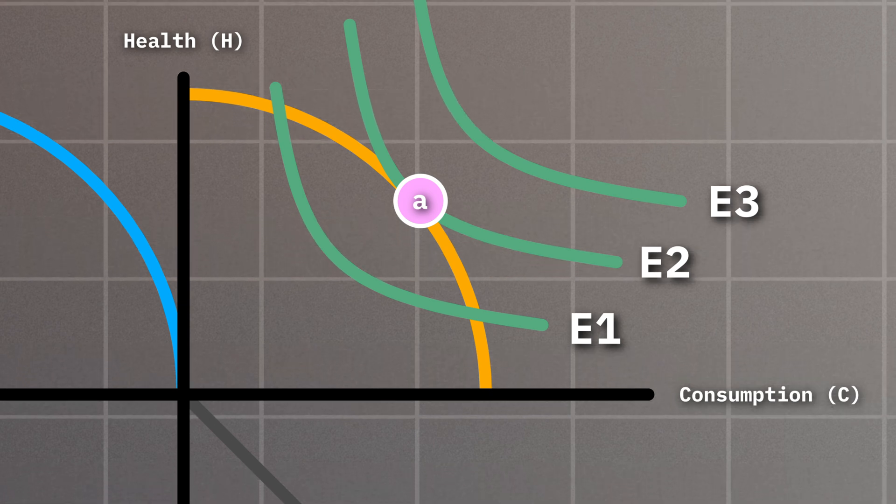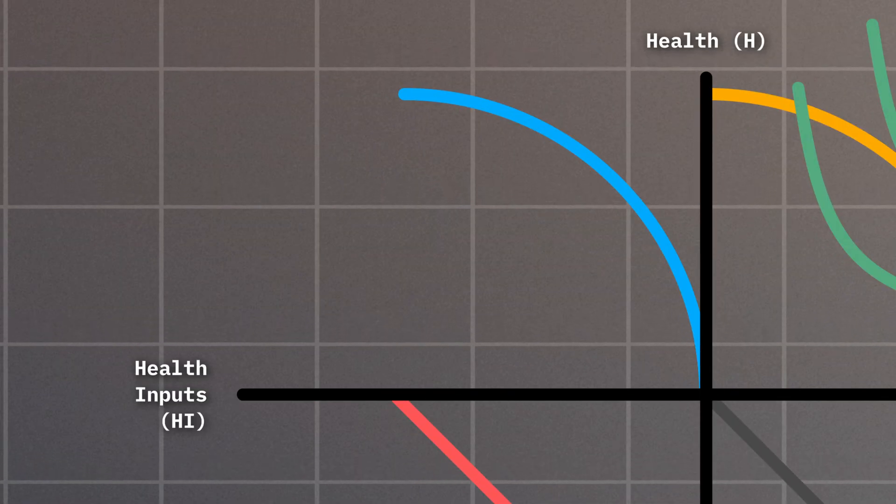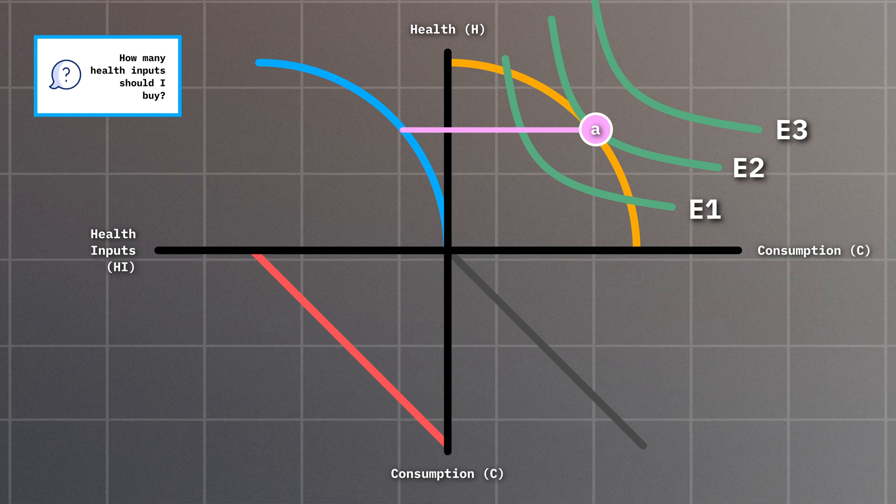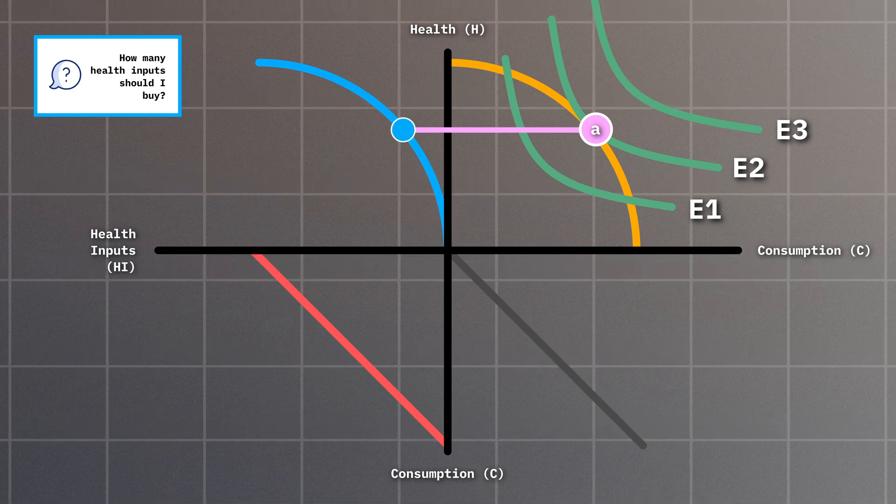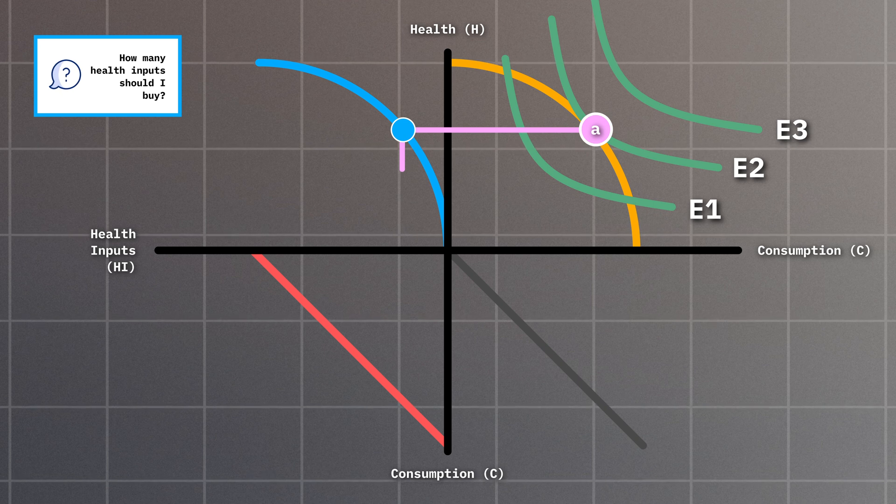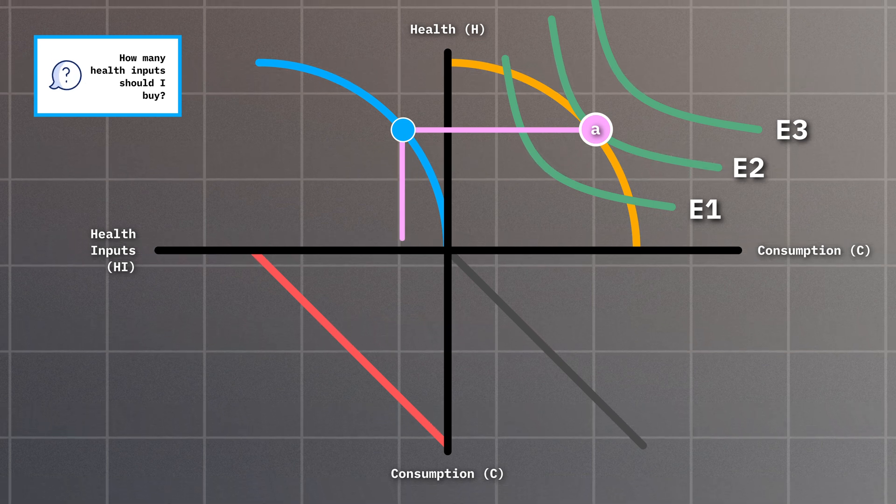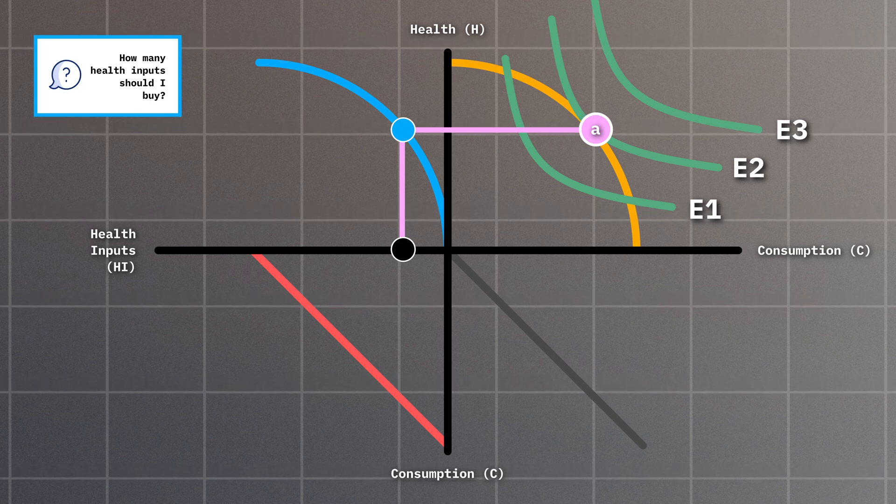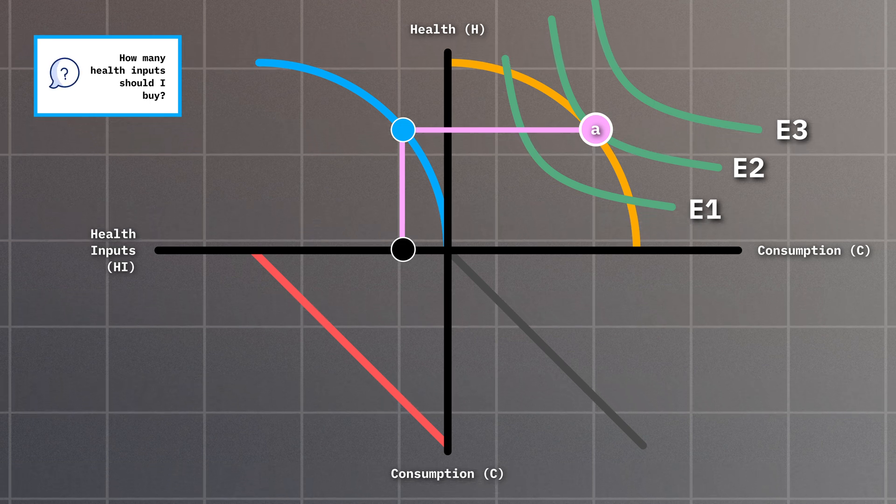Now that we've answered the question of how healthy we want to be, we can move on to quadrant two and ask how many health inputs we should buy. If we draw a horizontal line from point A, we arrive at this point on the production frontier. From here, we drop down vertically until we hit the point of intersection for our health inputs. This gives us the corresponding quantity of health inputs we need to buy to achieve our desired level of health.